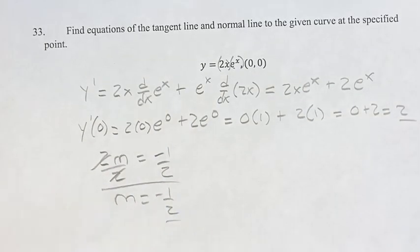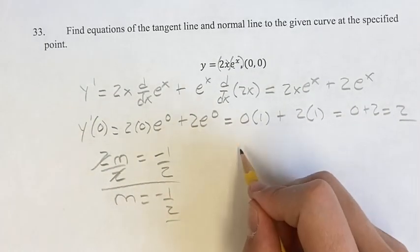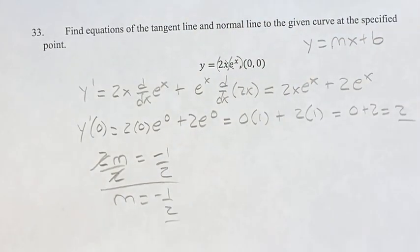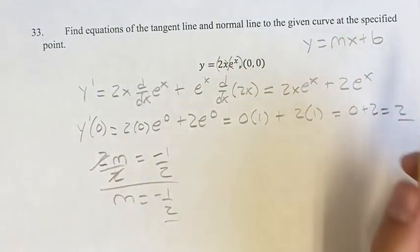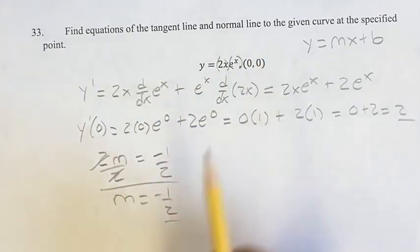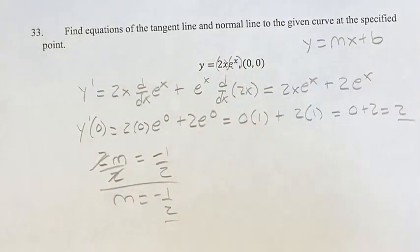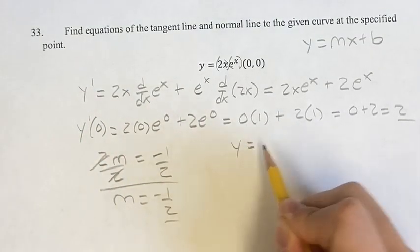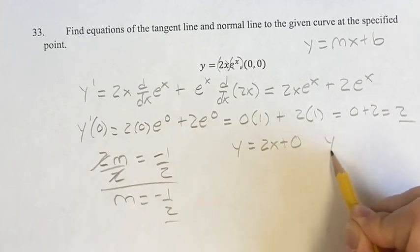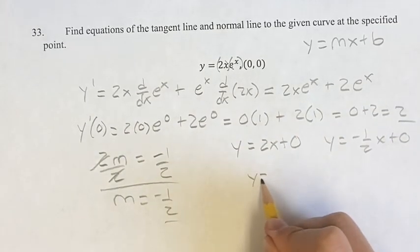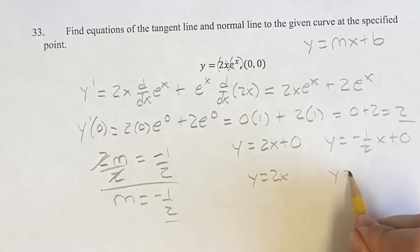So this is the slope of the tangent line, this is the slope of the normal line. When we're looking at the function y equals mx plus b, m is the slope which we know, and b we also actually know because we know it's through this given point, and 0, 0, if it's on the curve, is the y-intercept of that curve. So this is y equals 2x plus 0, and y equals negative 1 half x plus 0. So the equation of the tangent line is y equals 2x, the equation of the normal line is negative 1 half x.